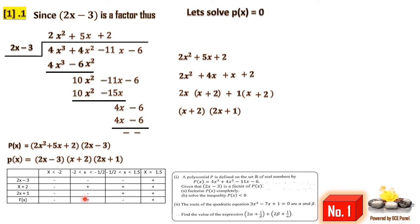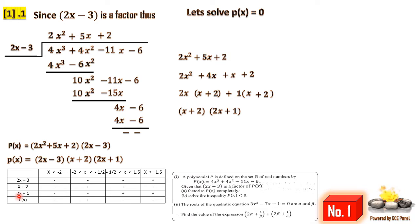We use a sign table with the three linear factors: (2x minus 3), (x plus 2), and (2x plus 1). Testing x less than negative 2, we use x equals negative 3: 2(−3) − 3 = −9 (negative); −3 + 2 = −1 (negative); 2(−3) + 1 = −5 (negative). Multiplying the signs: negative times negative times negative gives a negative product, so p(x) is negative in this interval.